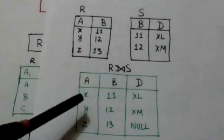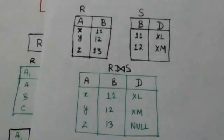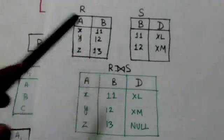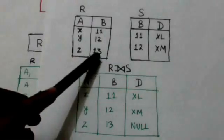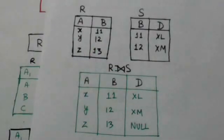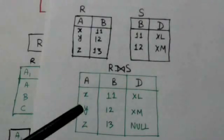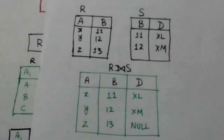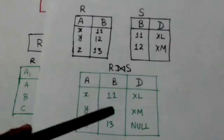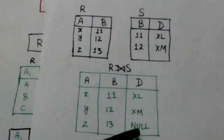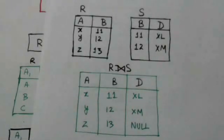This tuple of the resulting relation is also formed in the same way. Now see this tuple of relation R — it doesn't have any matching tuple in relation S. It is also present in the resulting relation, and the attributes of relation S are filled or padded with null values in the resulting relation.